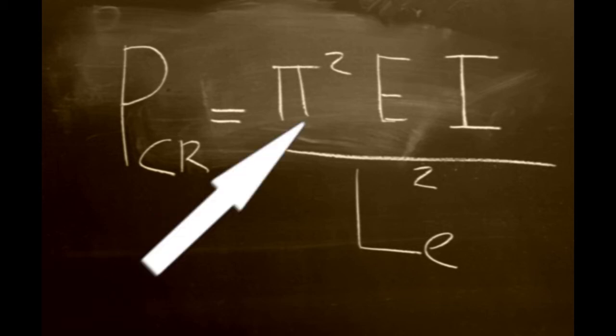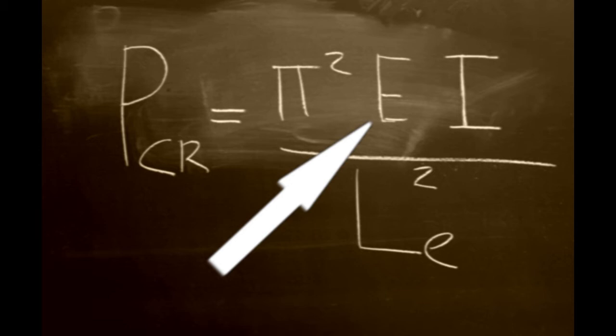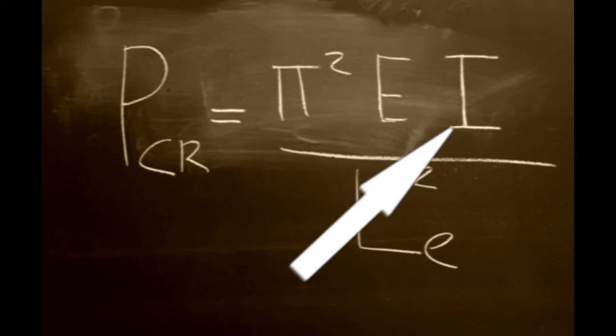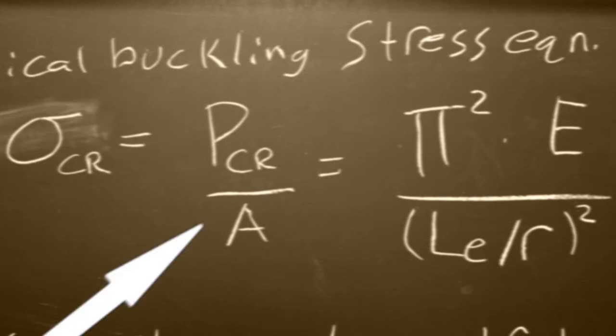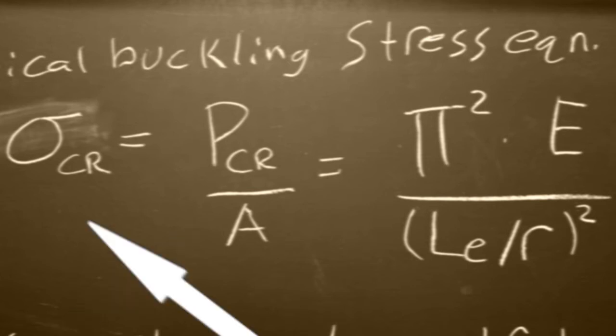Pi squared times the modulus of elasticity times the moment of inertia all over the effective length squared. If we divide this by the cross-sectional area of the beam, we find the critical stress.